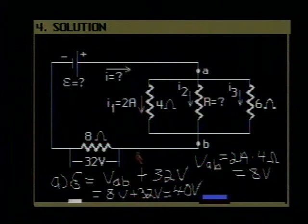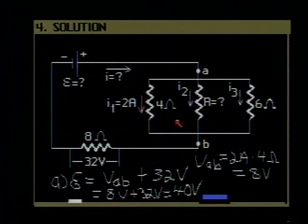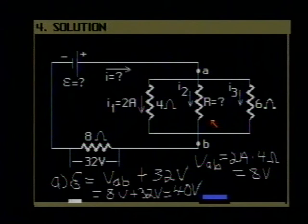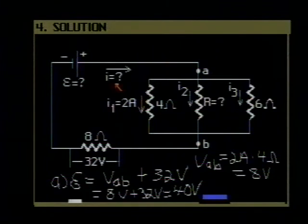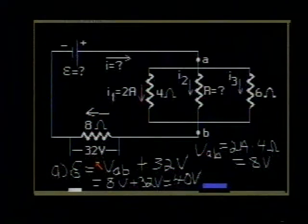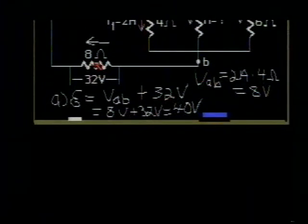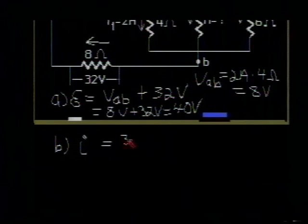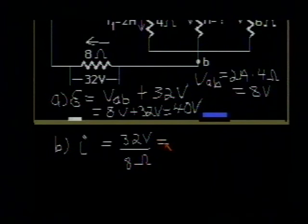In part B, we are asked to find the total current I. One of the ways we have been doing that is to find the equivalent resistance of the circuit and then use Ohm's law to find the total current, but we can't find the equivalent resistance of this circuit because we do not know the value of this unknown resistor R. But we can still find I. I would simply be equal to the voltage drop across that 8 ohm resistor — 32 volts divided by 8 ohms — and that is equal to 4 amps. That gives us the total current I.